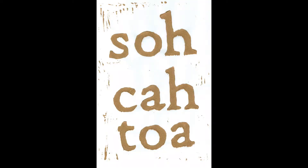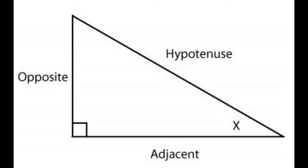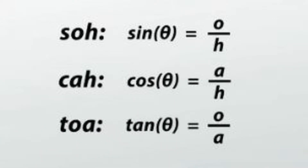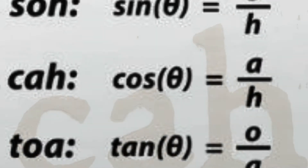In physics, in physics, we use SOH-CAH-TOA all the time. We use it with right triangles to find the x and y. We use SOH-CAH-TOA all the time. Sine is the opposite side over the hypotenuse, cosine is adjacent over hypotenuse, then there's tangent that is opposite over adjacent. Just don't forget to include your angle in physics.